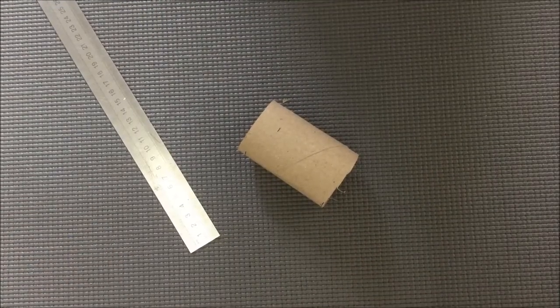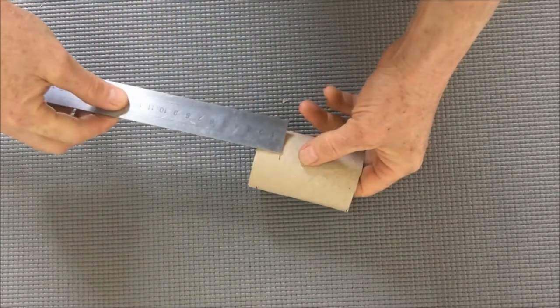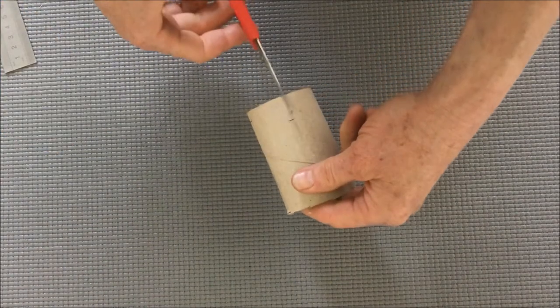To make a pot from cardboard tube, take your tube and measure about two centimeters from the bottom and then cut four slits in the bottom of the pot.